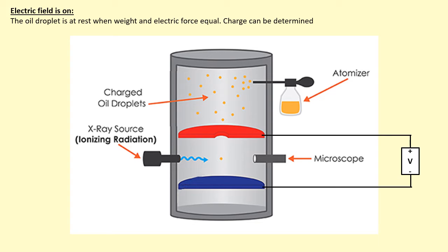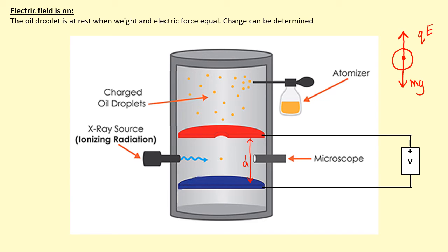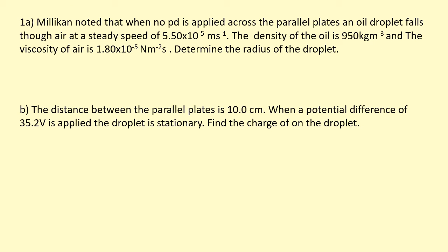The two plates are separated by some distance d and have a potential difference V across them. We apply a voltage just enough to keep the droplet stationary between the plates. The weight of the droplet is then balanced by the electric force upwards. The electric force is charge times electric field strength, and the electric field strength is the voltage divided by the distance — this lets us work out the charge q.